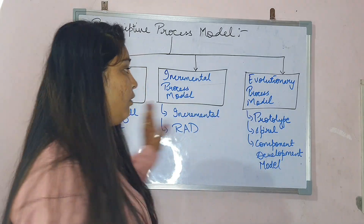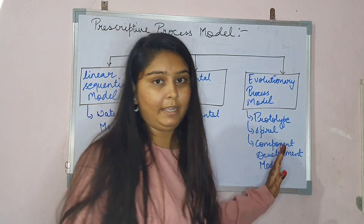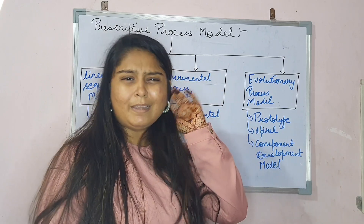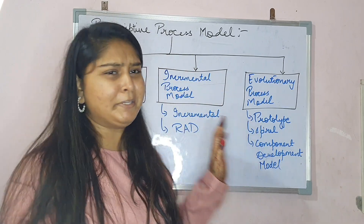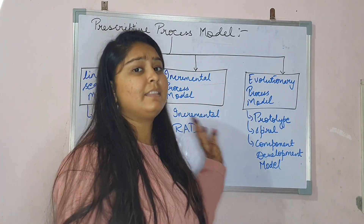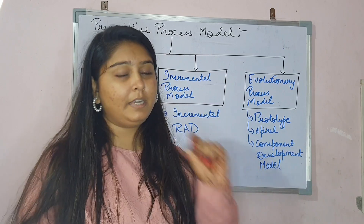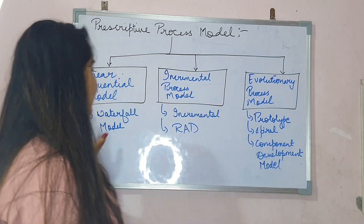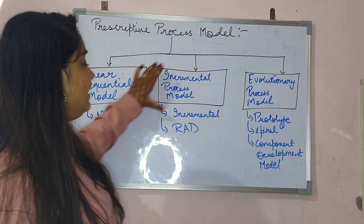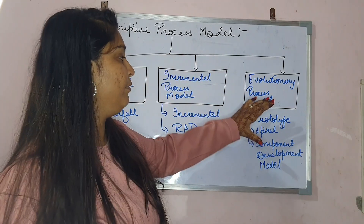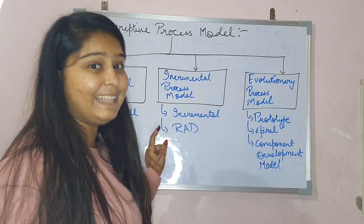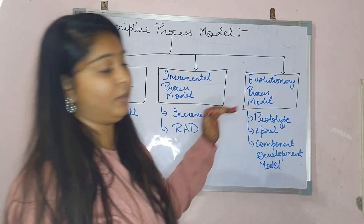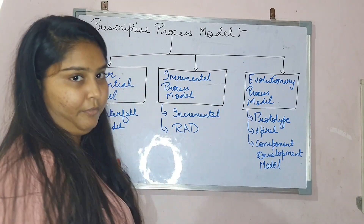This flowchart is just for learning purposes — you are not going to get it in any book. I have made it for your understanding, to show that there are three types of prescriptive process models, each with some examples.